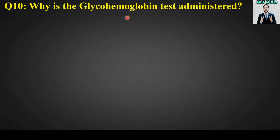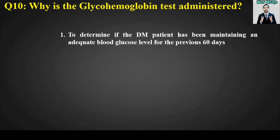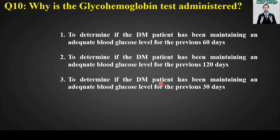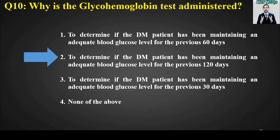MCQ number ten: Why is the glycohemoglobin (HbA1c) test administered? Options are: to determine if the diabetes patient has been maintaining an adequate blood glucose level for the previous 60 days; for the previous 120 days; for the previous 30 days; or none of the above. The right answer is option number two — to determine if the diabetes mellitus patient has been maintaining an adequate blood glucose level for the previous 120 days.